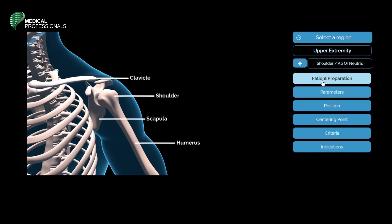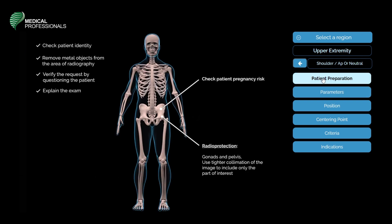The patient's preparation for a routine shoulder x-ray includes the following. Check the patient's identity. Have the patient remove metal objects from the area being imaged.